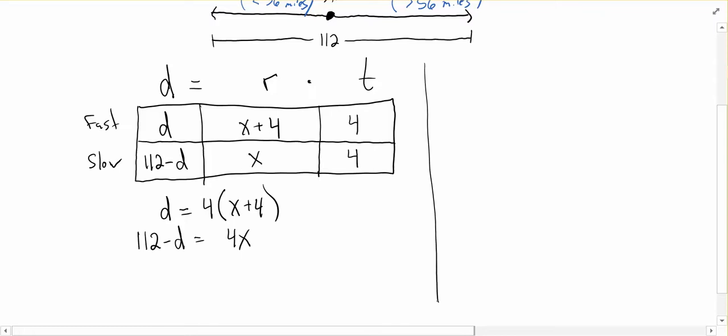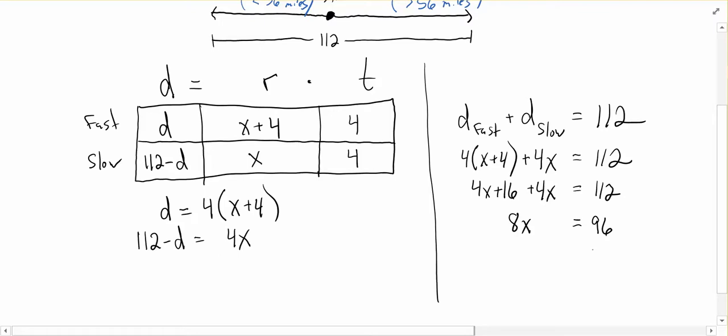Another approach that we could take is we could say, if I take the distance of the fast person and add the distance of the slow person, if I add those together, I get 112. The distance of the fast person is going to be their rate times their time. The distance of the slow person is going to be their rate times their time. And the cool thing about this approach is that this only has one variable in it. So I could go ahead and distribute, then combine like terms, and I may as well subtract the 16 to the other side, and then divide by 8.